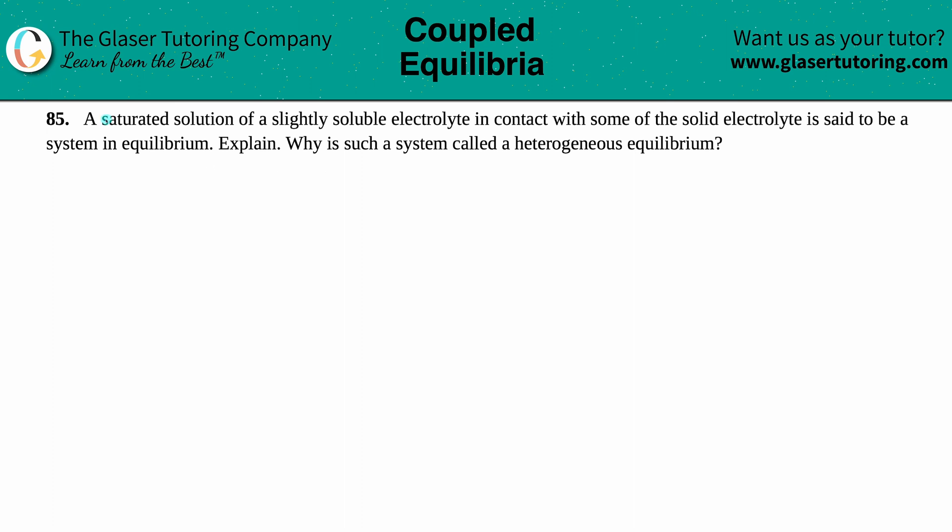Number 85: A saturated solution of a slightly soluble electrolyte in contact with some of the solid electrolyte is said to be a system in equilibrium. Explain why is such a system called a heterogeneous equilibrium. Okay, so there's two questions here. We first have to explain why the first sentence is true, and then we have to talk about why that system is a heterogeneous equilibrium.